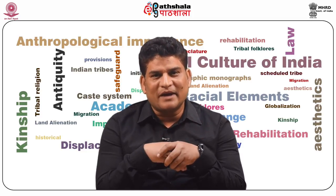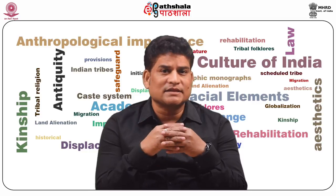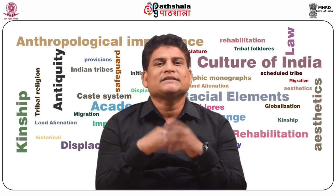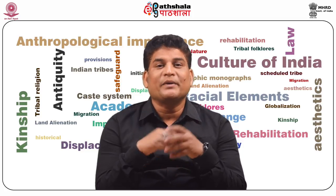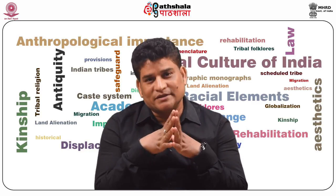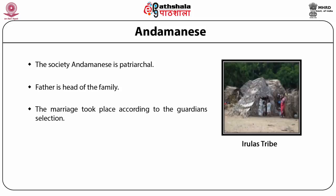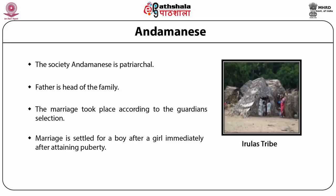Both types of cross-cousin marriage are in vogue in Toda society. In all cases, bride price is compulsory. Descent is patrilineal; property passes from father to legal sons, and females have no right to property. Among the Andamanese, the society is patriarchal; the father is the head of the family. Marriage is settled for a boy after a girl immediately after attaining puberty. Child mortality is very pronounced in the area.